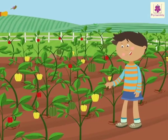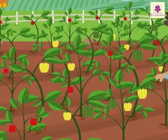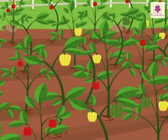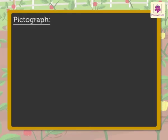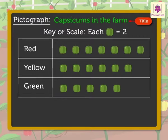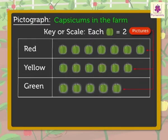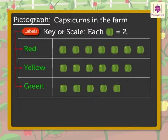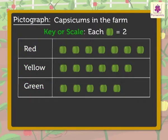Joy visited a farm which was full of red, yellow, and green capsicums. Now, let's read this pictograph. Here, the title 'capsicums in the farm' tells us the pictograph is about the number of capsicums in the farm. The labels give us the information on the colors of the capsicums. The key or scale tells us that each capsicum picture is equal to two capsicums.